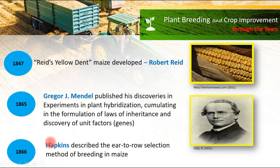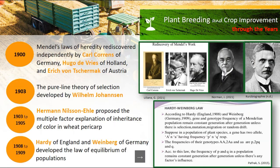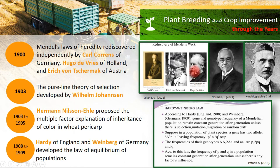In 1866, Hopkins described the ear-to-row selection method of breeding in maize. In 1900, a trio independently rediscovered Mendel's laws of heredity: Carl Correns from Germany, Hugo de Vries of Holland, and Erich von Tschermak of Austria. Remember this — in 1900, they independently discovered Mendel's laws of heredity.